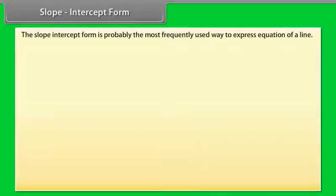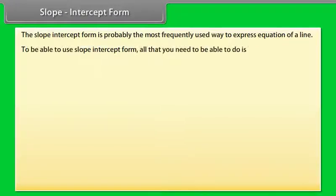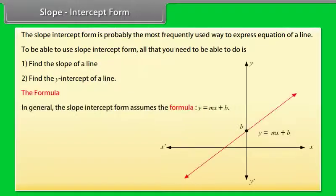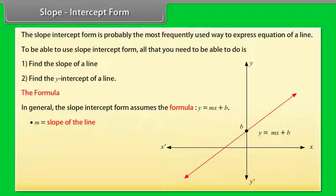Slope-intercept form is probably the most frequently used way to express the equation of a line. To use slope-intercept form, you need to find the slope of a line and the y-intercept of a line. In general, the slope-intercept form assumes the formula y = mx + b, where m is the slope of the line and b is the y-intercept.